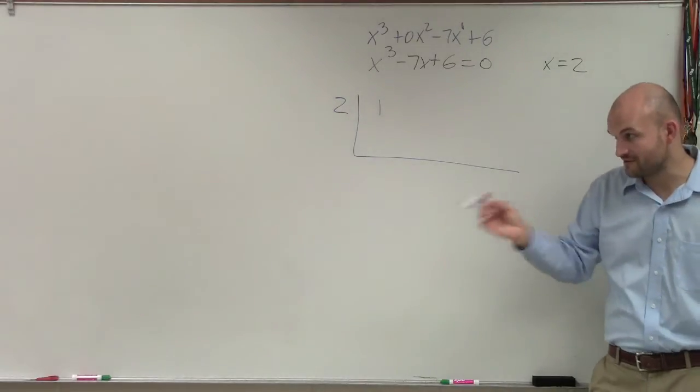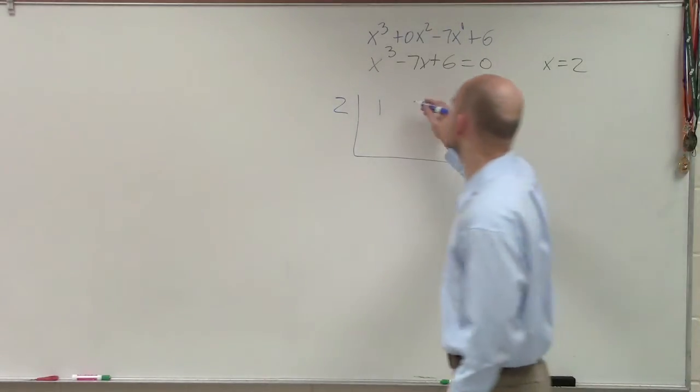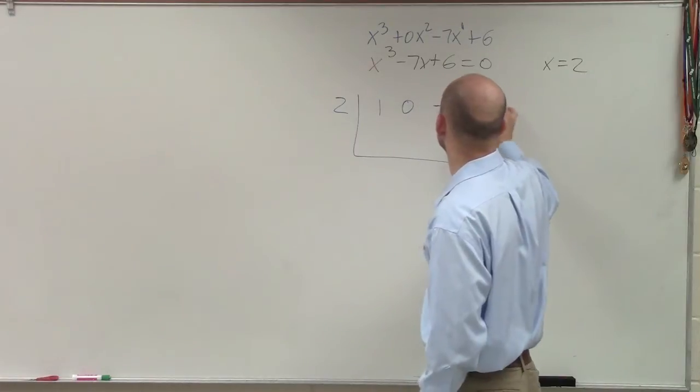Does everybody see though? That's a very important point to remember. So we have 1, 0, negative 7, and 6.